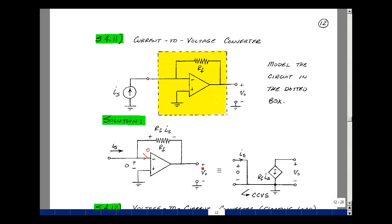So the output voltage here, the rise in voltage, is equal to minus Rf times Is plus zero.